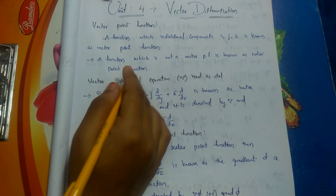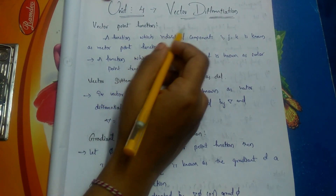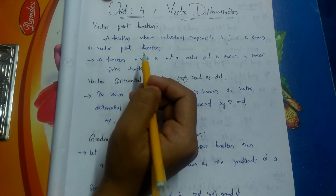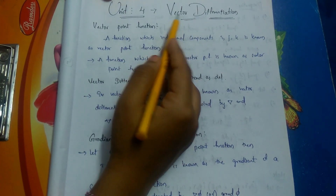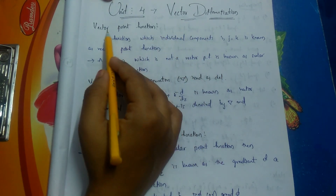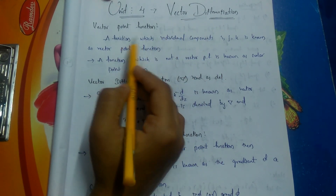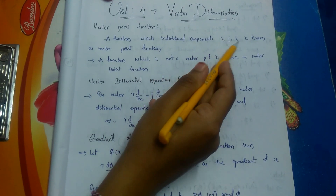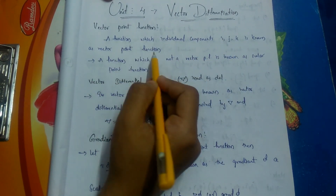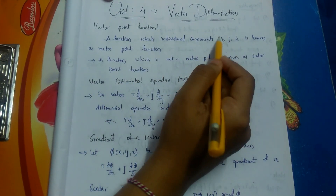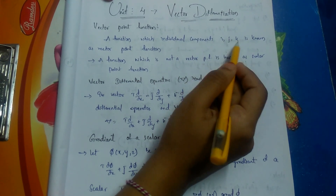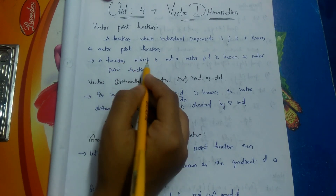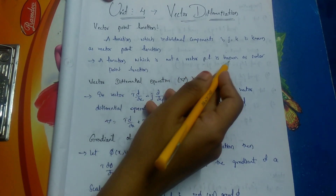Here is another new chapter on vector differentiation. In this chapter we will study the differentiation of vectors. A function whose individual components i, j, k are vectors is known as a vector point function. A function which is not a vector point function is known as a scalar point function.